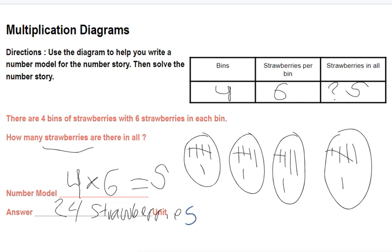Okay, we used our diagram. We drew a picture to help us. And we figured out the number model with our unknown. And we found the answer is 24 strawberries. Great work, everyone. Bye everyone.